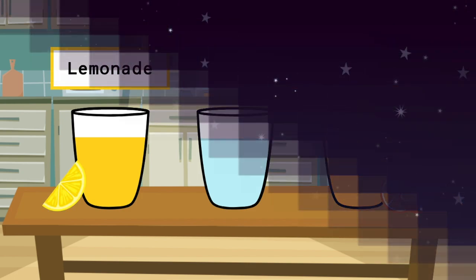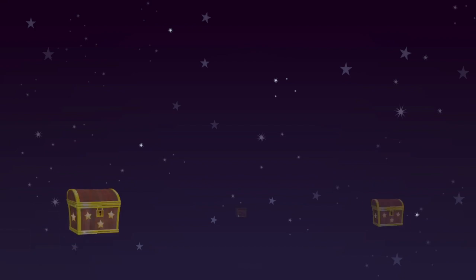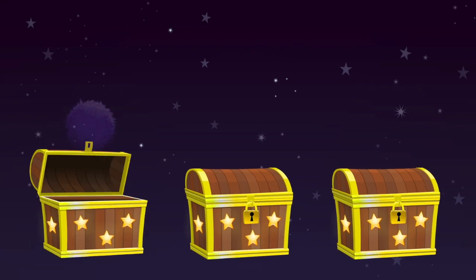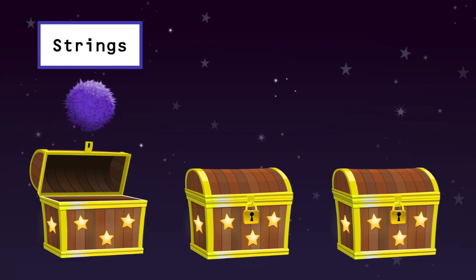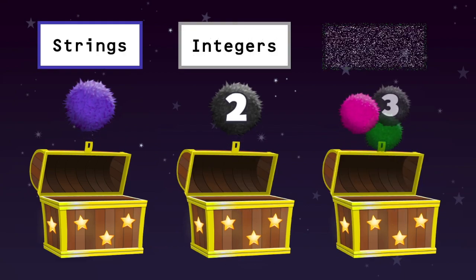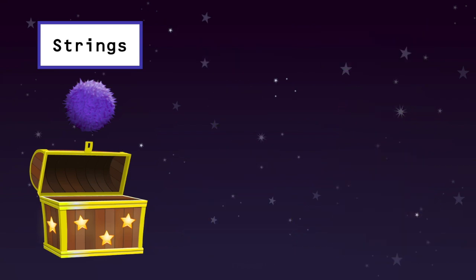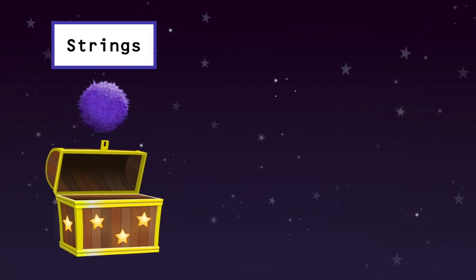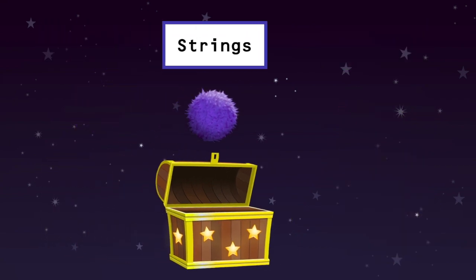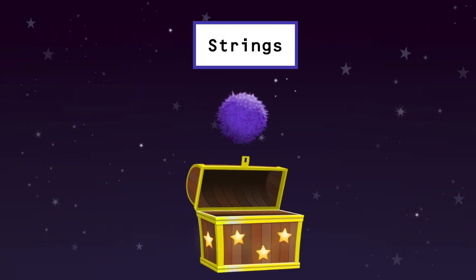In programming, there are many different types of values that can be stored in a variable, but in Codable, we focus on three: strings, integers, and arrays. Let's break these down really quick. Some variables can store values that are characters or words, called strings.